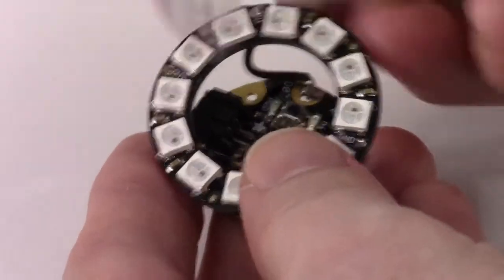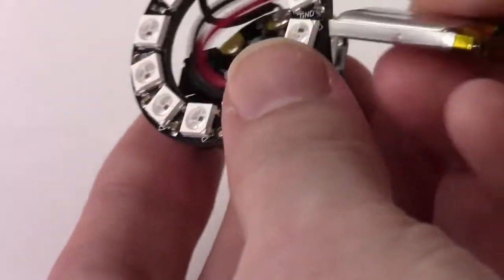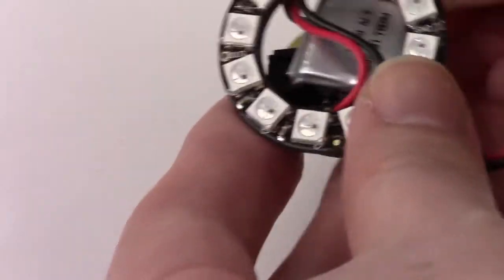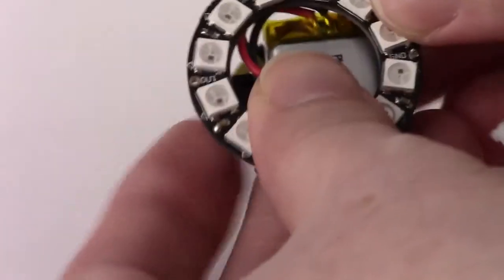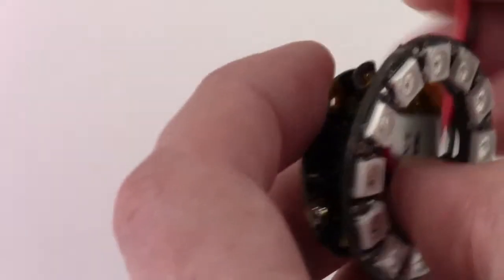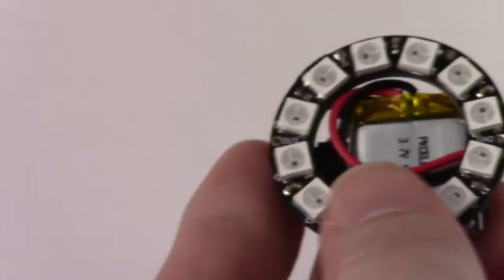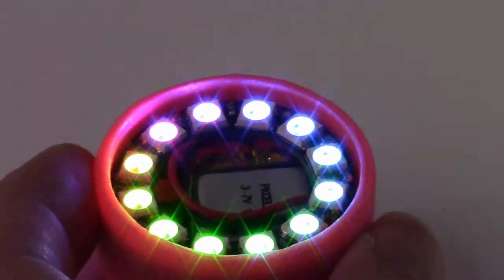After the device is programmed, you simply slip in the lithium battery in the slot between the two pieces, route the cable around, plug that in, and it slips into the watch.